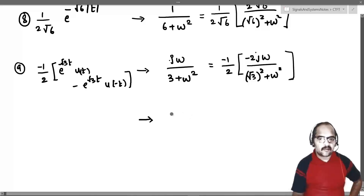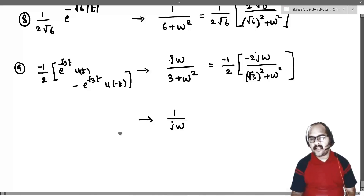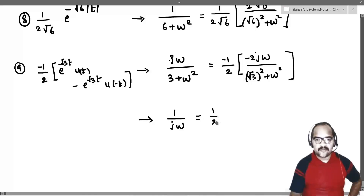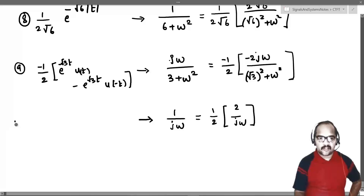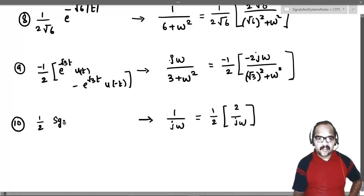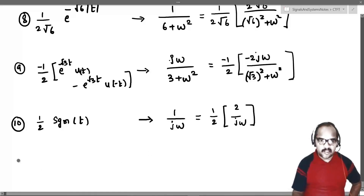Tenth example: which signal will have 1 by j omega as its Fourier transform? This can be written as 1 by 2 times 2 by j omega. The signum function has 2 by j omega as its Fourier transform, so the signal is 1 by 2 multiplied with signum of t, which will have 1 by j omega as the Fourier transform.